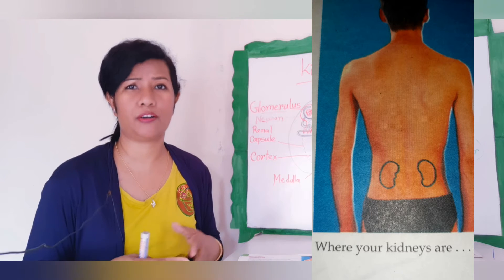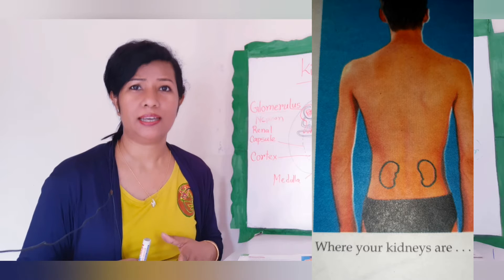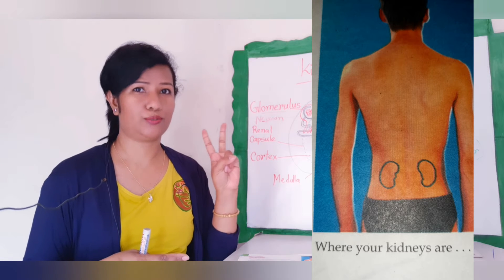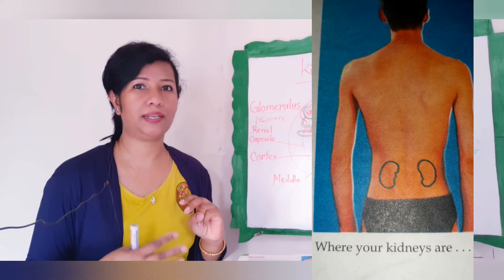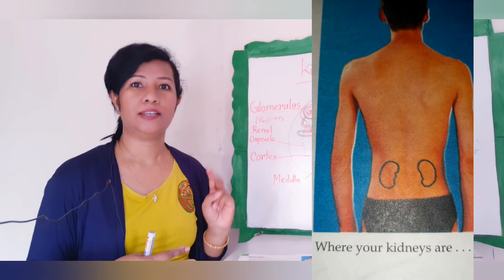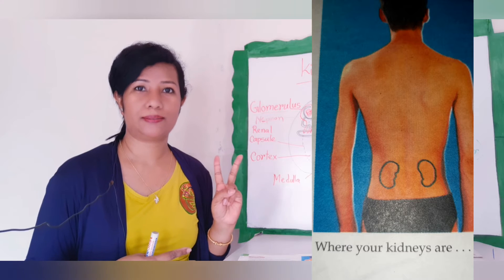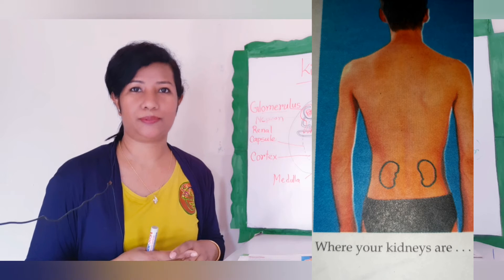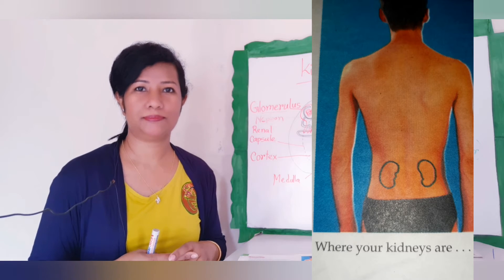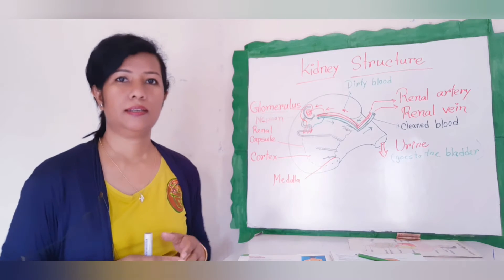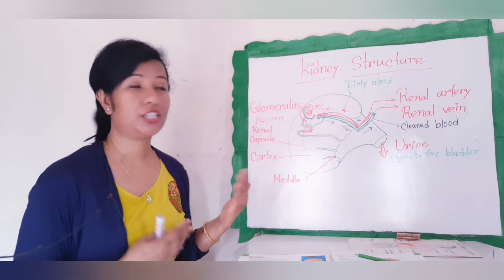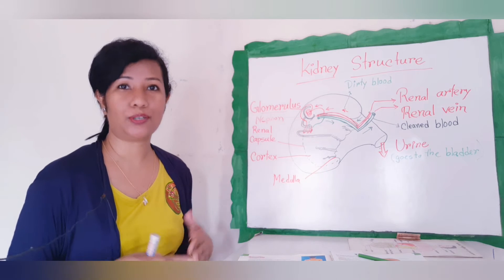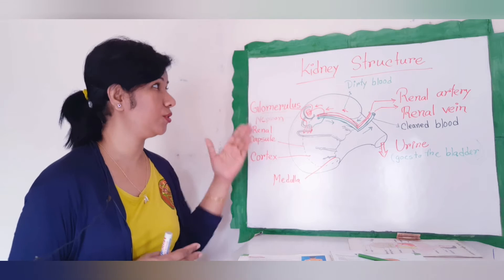That is two kidneys. Humans have two kidneys and they are bean-shaped. Now let's talk about the structure and function — what is the structure? We will start with the nephron.